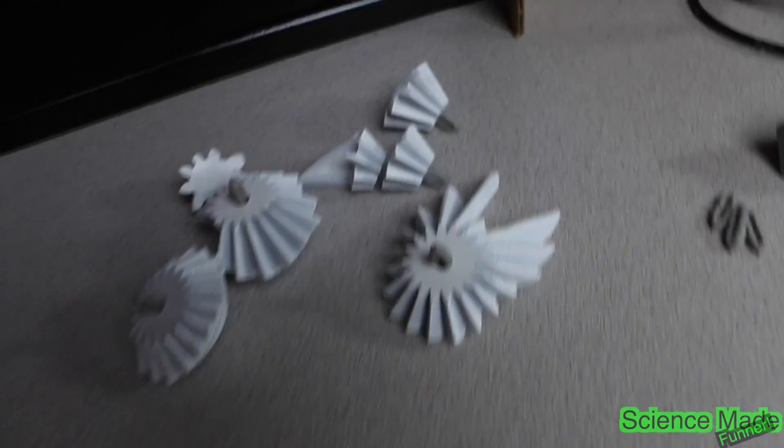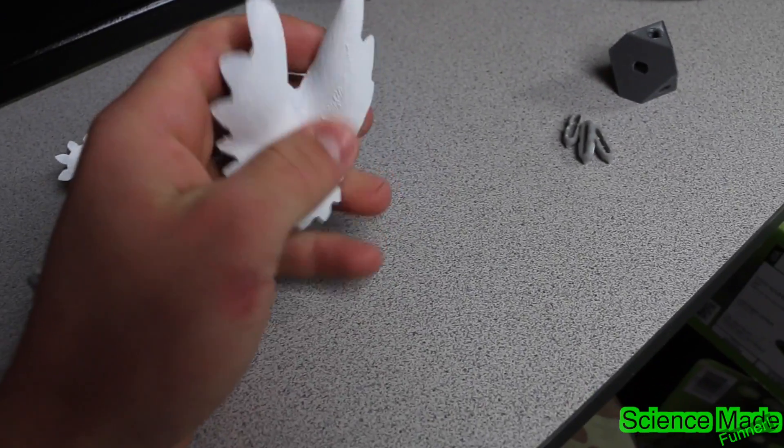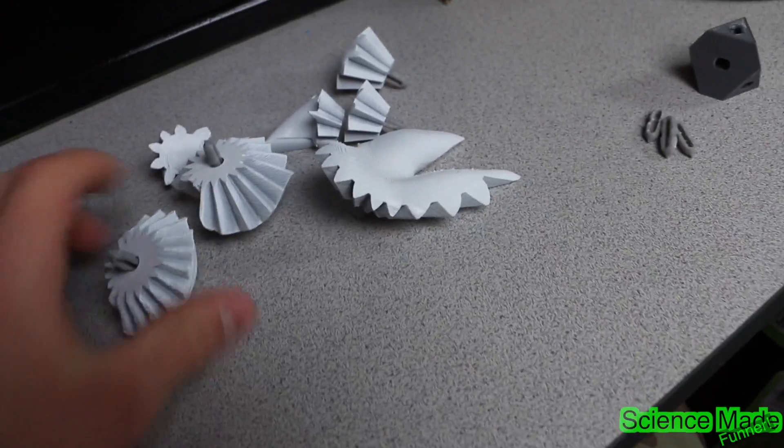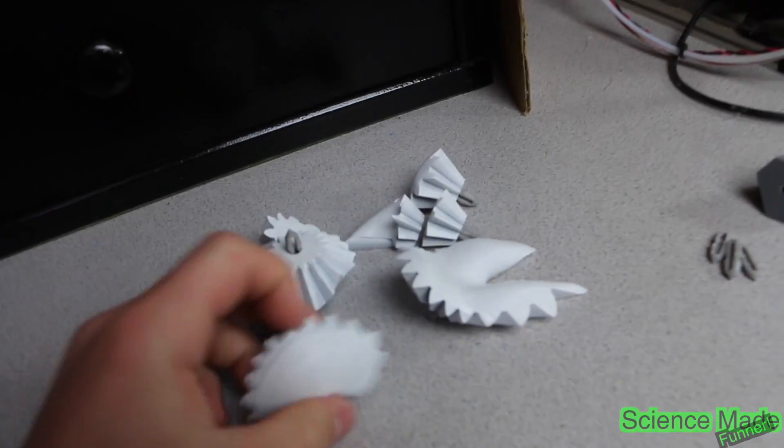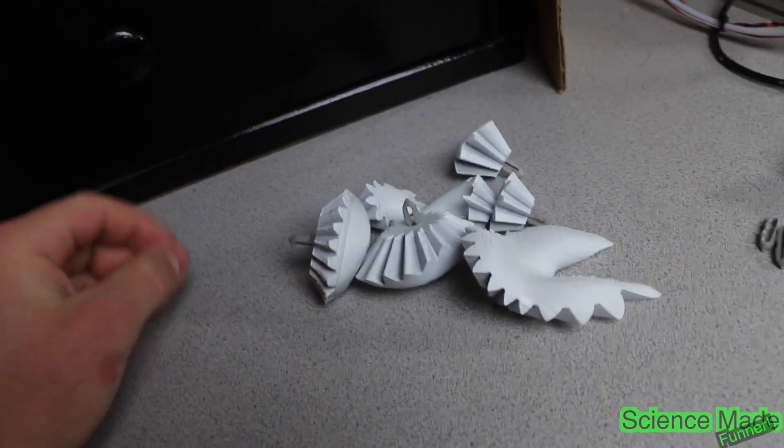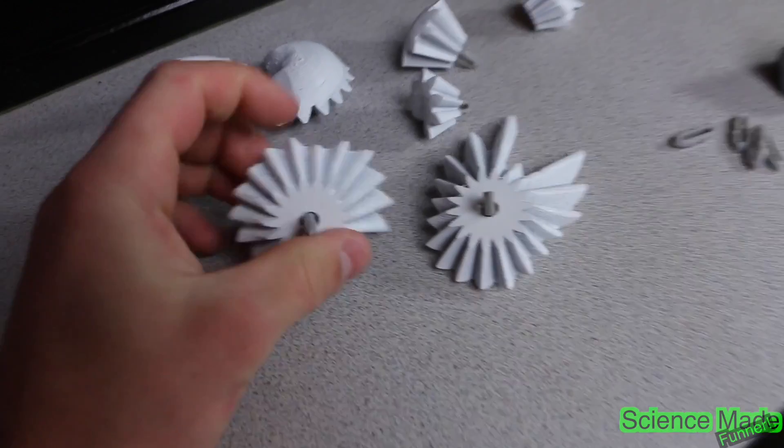All right, there they are. I gave them a quick coat of paint so that they look nice, so it actually looks like a tooth. I'm printing the last piece right now. When that's done, I'll give that a quick coat of paint and then we'll put it all together and test it out.